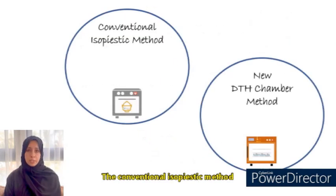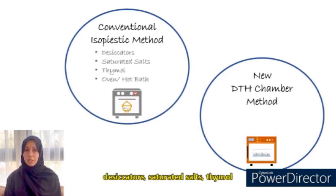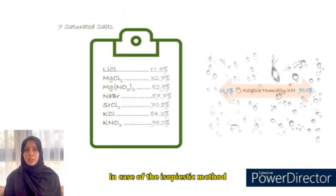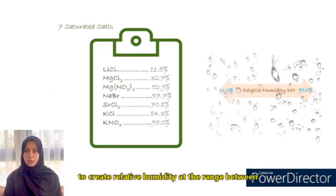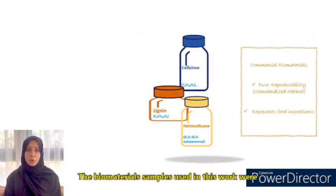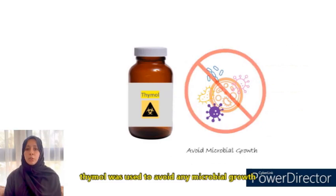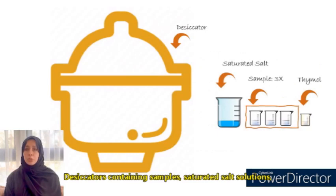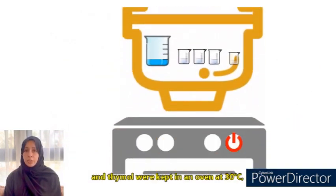The conventional isopiestic method typically requires the use of desiccators, saturated salts, thiamol, an oven, or a hot bath. The new method, on the other hand, was performed with the use of a temperature humidity chamber alone. In the case of the isopiestic method, seven saturated salt solutions were used to create relative humidity in the range between 11.5 and 95 percent in separated desiccators. The biomaterial samples used in this work were commercial cellulose, lignin, and hemicellulose. Thiamol was used to avoid any microbial growth in the samples or the prepared solution. Desiccators containing samples, saturated salt solutions, and thiamol were kept in the oven at 30 degrees Celsius.